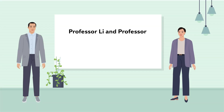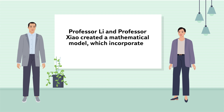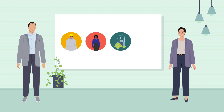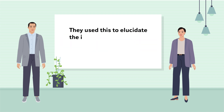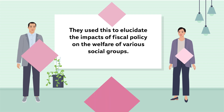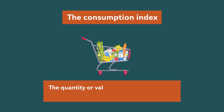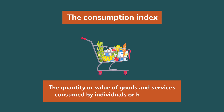Professor Li and Professor Zhao created a mathematical model which incorporates various agents such as workers, entrepreneurs, firms, and government, to elucidate the impacts of fiscal policy on the welfare of various social groups. In this research, welfare is defined using the consumption index, which essentially represents the quantity or value of goods and services consumed by individuals or households.